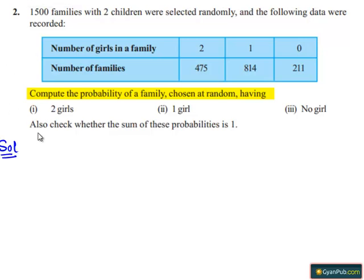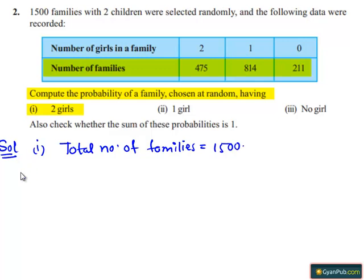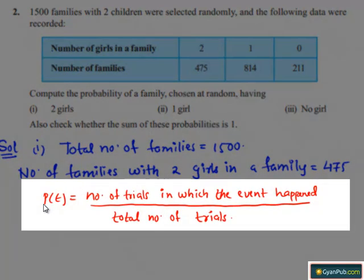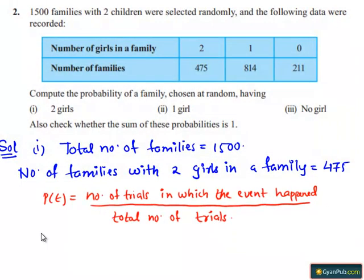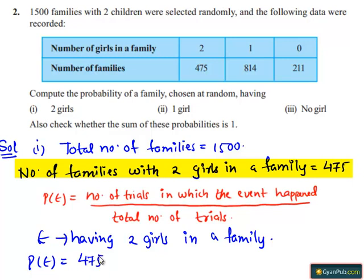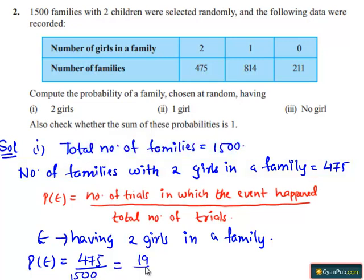Moving on to the solution, let us see the first part. Total number of families equals 1500. Number of families with two girls in a family equals 475. We know that the probability of any event P(E) equals the number of trials in which the event happened divided by the total number of trials. Let E be the event of having two girls in a family. Then P(E) equals 475 divided by 1500, which is equal to 19/60.